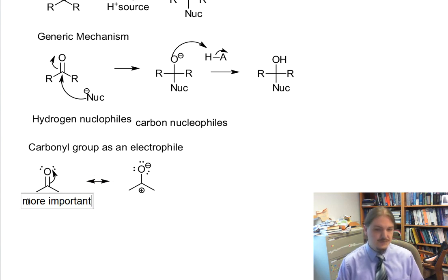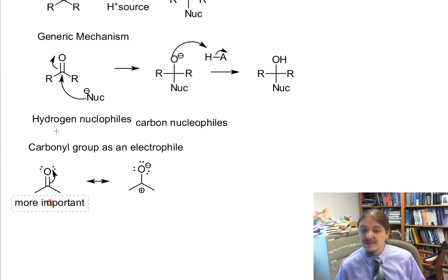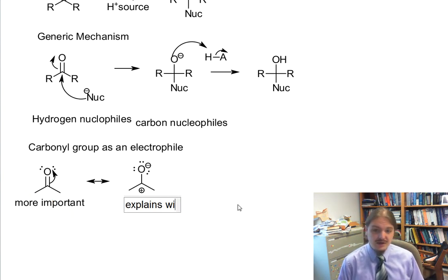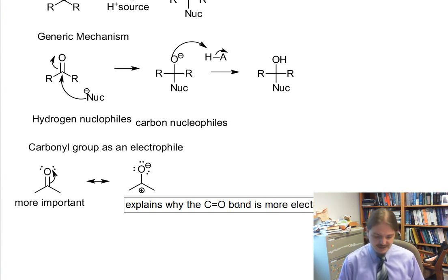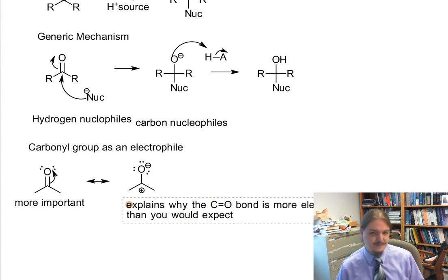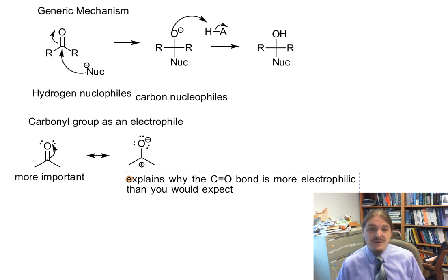Now, what is true is that the resonance contributor on the left is more important overall. It doesn't have a separation of charge. Everything has its octet. It's nice and neat. But this second resonance structure explains why the C=O bond is more electrophilic than you would expect otherwise, because there's a resonance structure here that has the carbon with some partial positive character and more partial positive character.